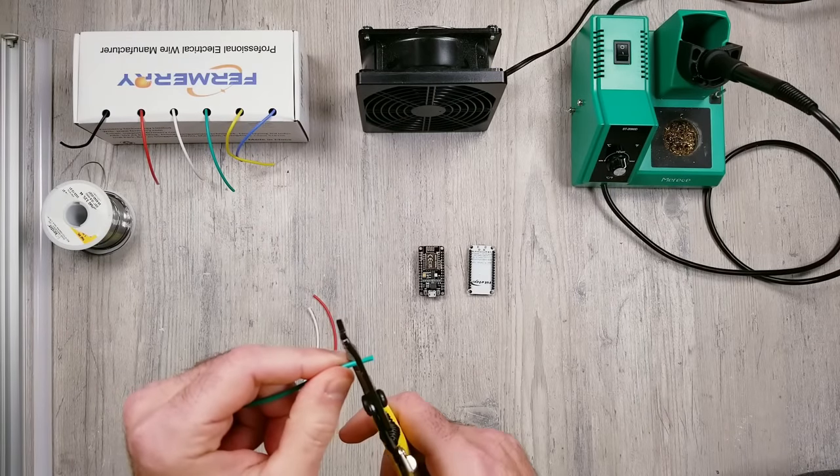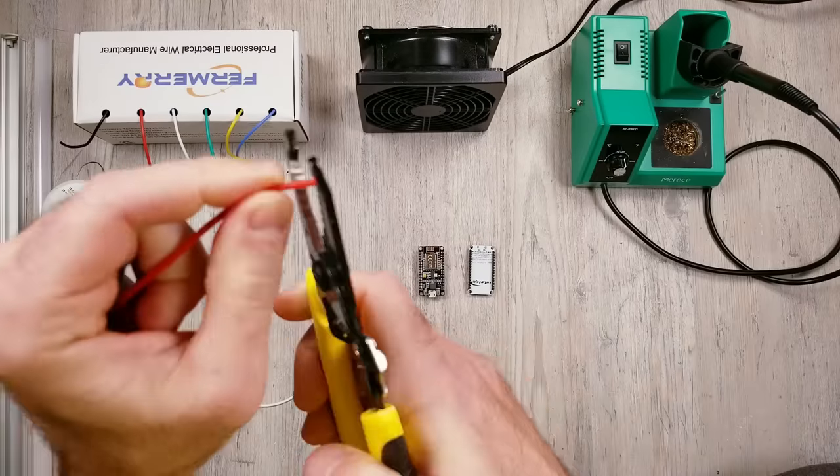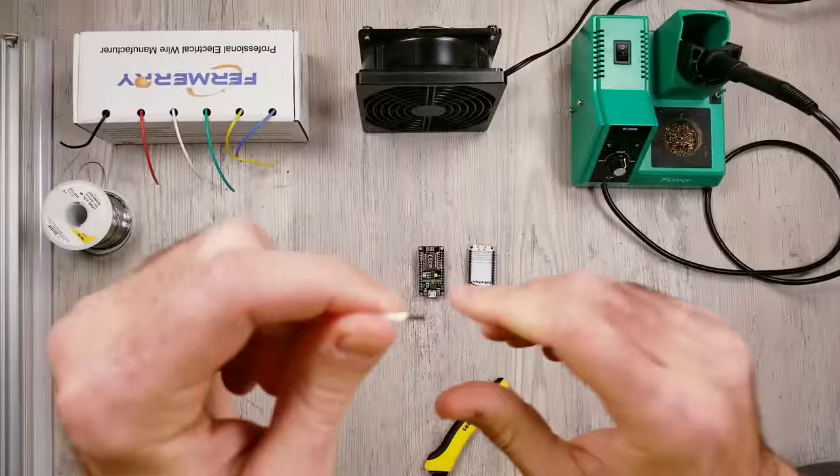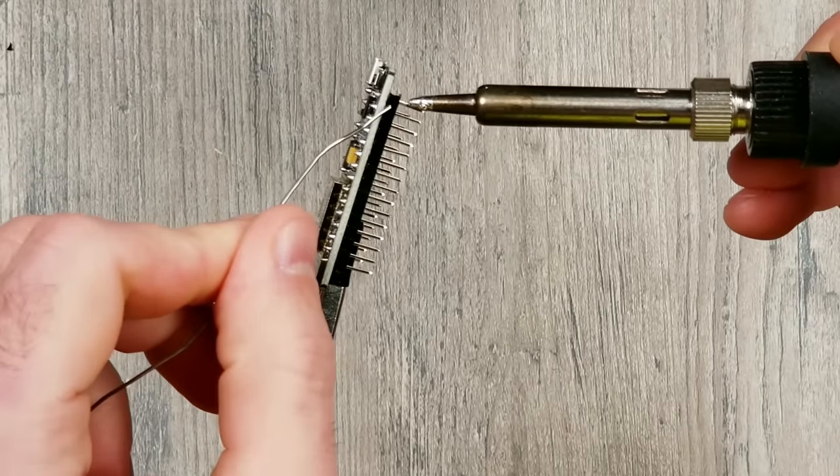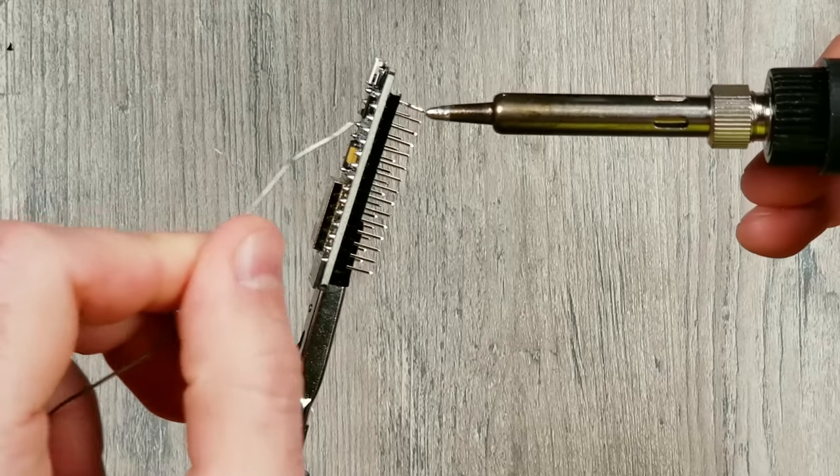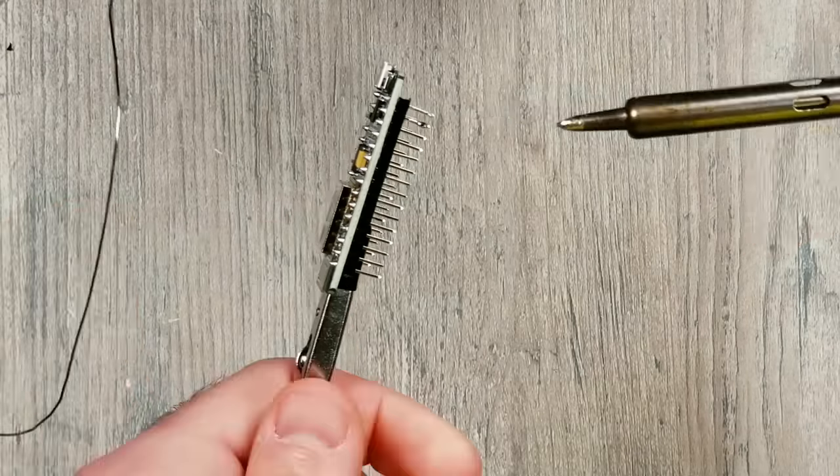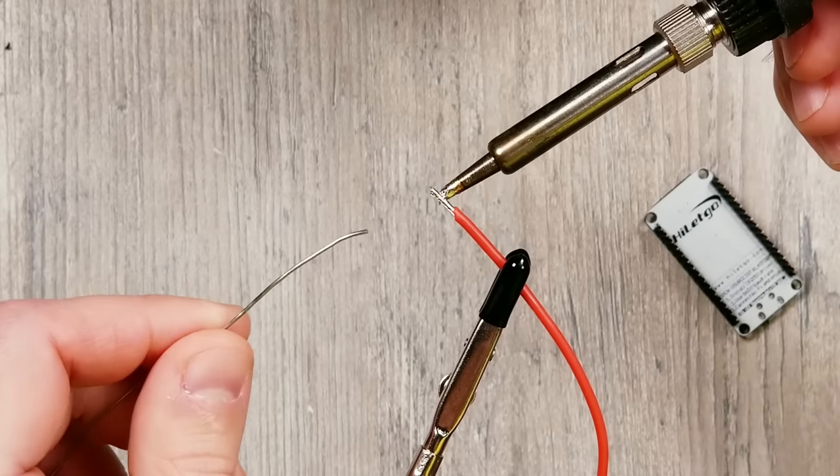You can prep the three wires just like we did in the previous step. On the ESP module I'm going to melt a little bit of solder into the VIN, GND, and D4 pin to get them ready for the wires to be connected.